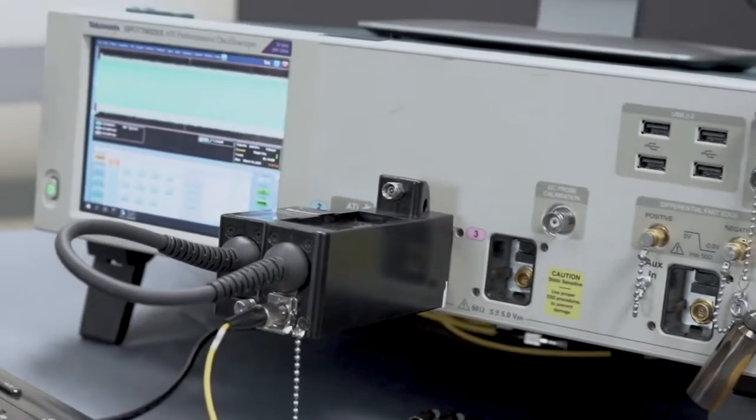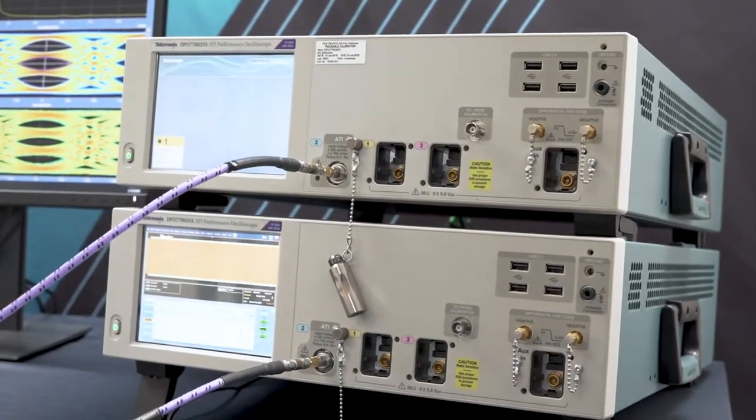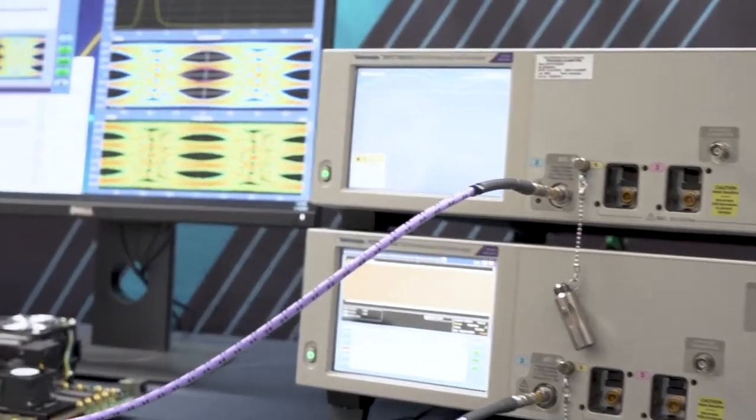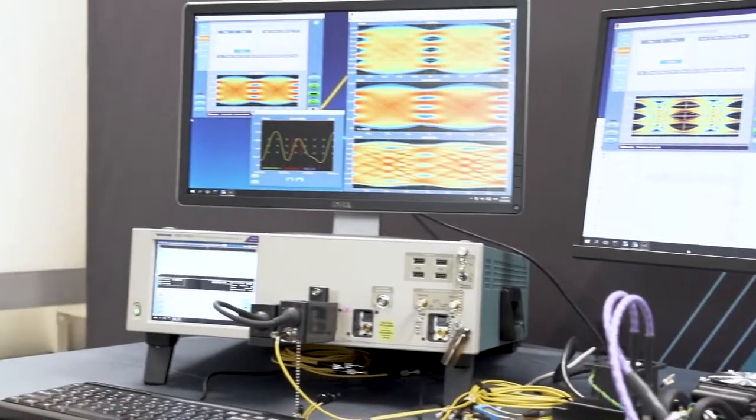These probes tightly integrate with the DPO70000SX series performance oscilloscopes to automatically apply the conversion gain of the optical to electrical converter, correct the frequency response, and apply a fourth order Bessel-Thompson filter. There's no need to set up any of this manually. Just plug it in and the scope does it for you.